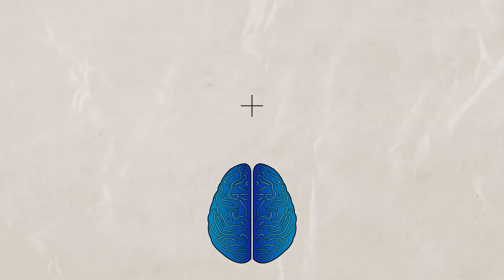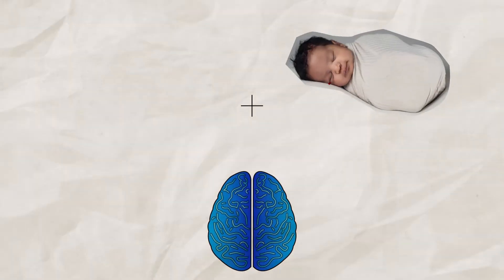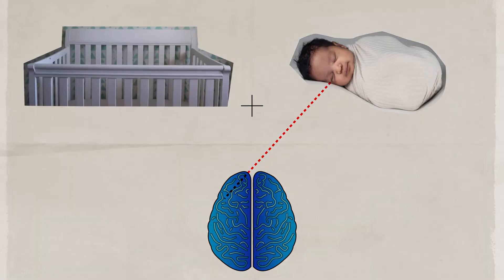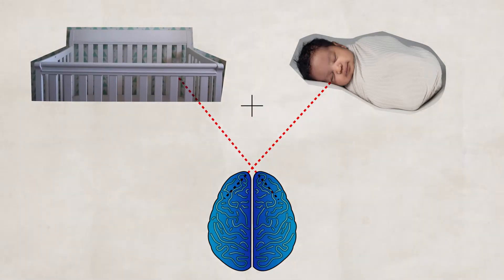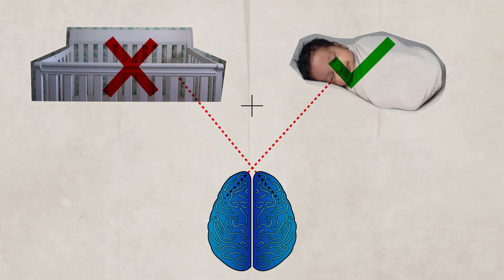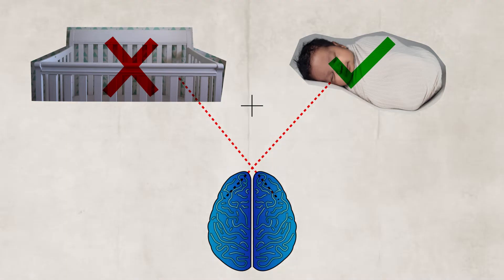This is because the left hemisphere contains language — remember Broca's area and Wernicke's area? They're located in the left hemisphere. So if an image of a baby was flashed to the right visual field of a split-brain patient and a picture of a crib to the left visual field, the patient would be able to say the word 'baby' but would not be able to verbalize the crib — though they would be able to draw the crib with their left hand.